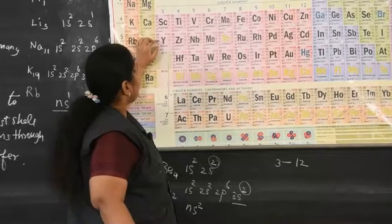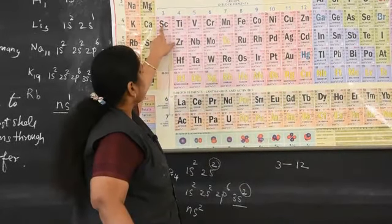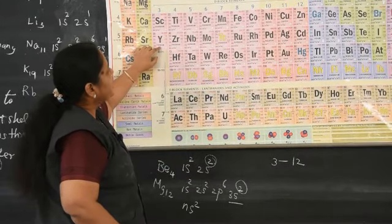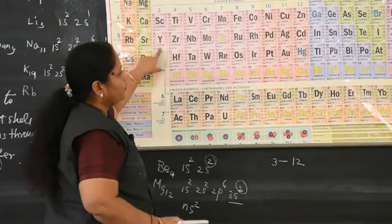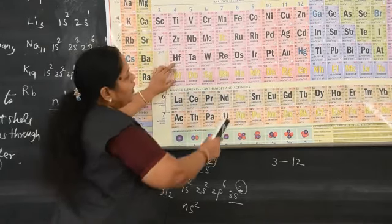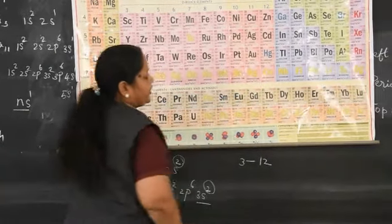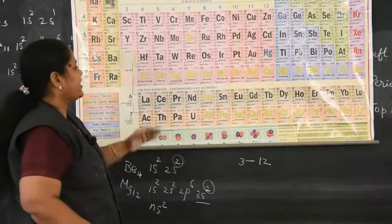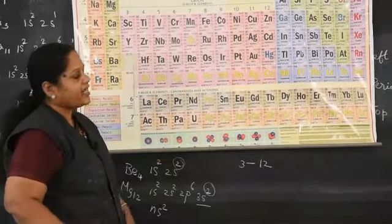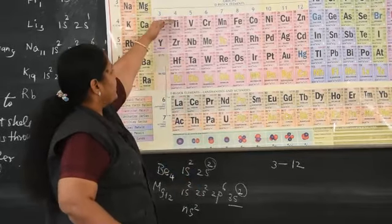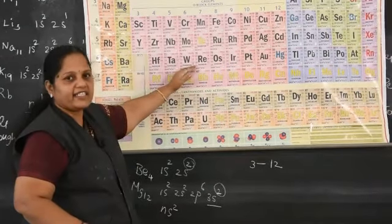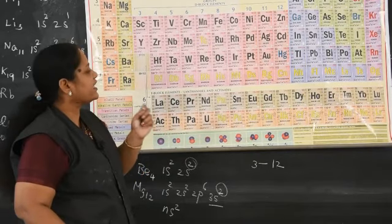Starting from scandium to zinc, the last electron enters 3D — these are the 3D series. From yttrium to cadmium, the last electron enters 4D — these are the 4D series. From hafnium to mercury, the last electron enters 5D — these are the 5D series. The 6D series is incomplete.